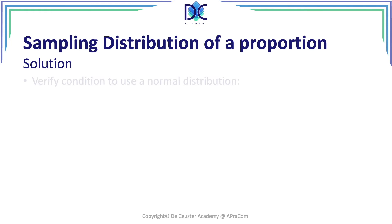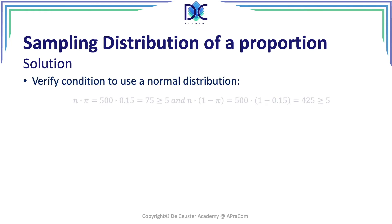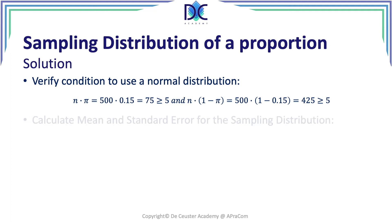As a solution, we first have to verify the conditions. n times pi is 500 times 0.15, which equals 75 — clearly larger than 5. And n times 1 minus pi is 500 times 1 minus 0.15, which equals 425 — also larger than 5. So we can use the normal distribution.